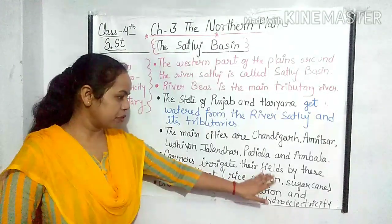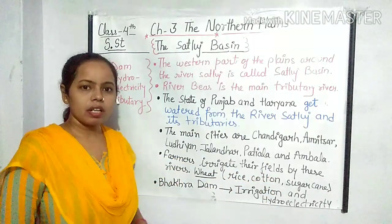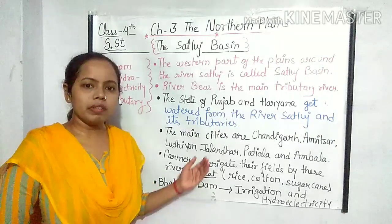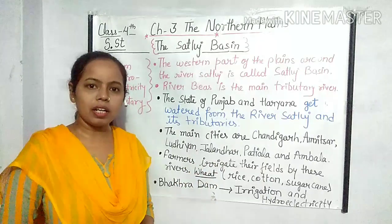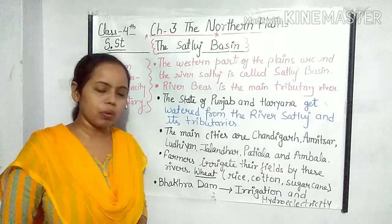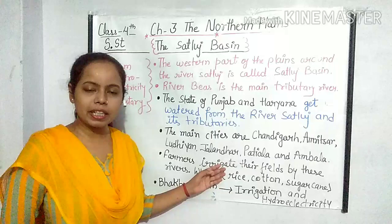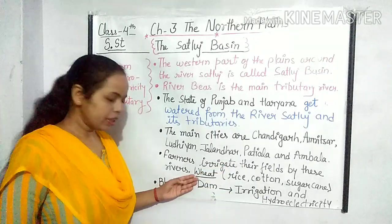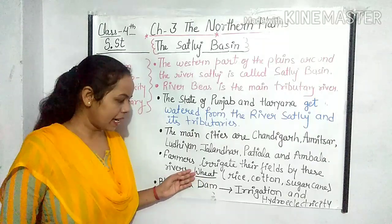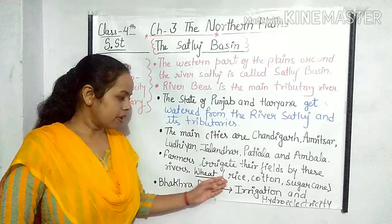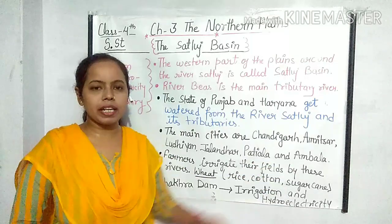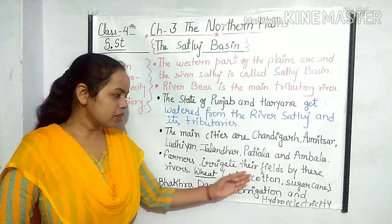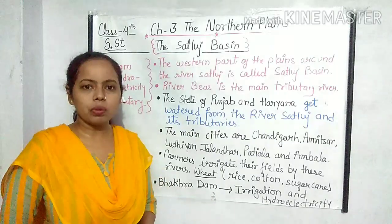Farmers irrigate their fields by these rivers. Jo kisaan hote hain, woh apne kheton ki sinchai River Satluj tatha unki tributary nadiyon ke dwara liye gaye paani se karte hain. Irrigation ka matlab hota hai sinchai karna. Wheat yahan ke mukhy fasal hain, and apart from wheat, rice, cotton and sugarcane are also grown here.